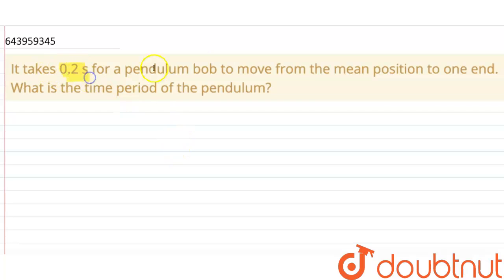It takes 0.2 seconds for a pendulum bob to move from the mean position to one end. What is the time period of the pendulum?